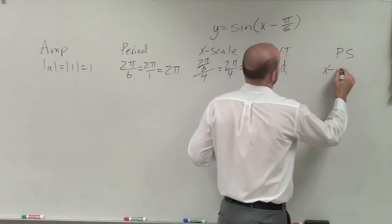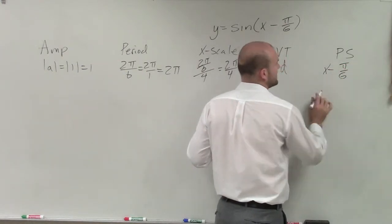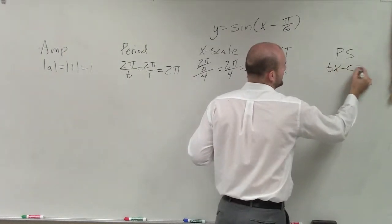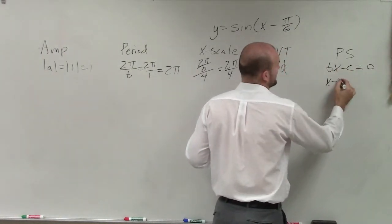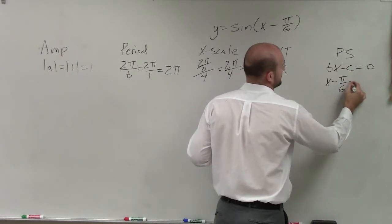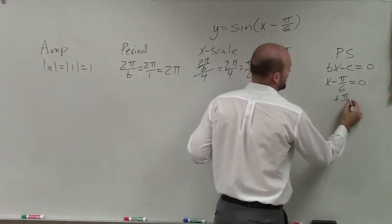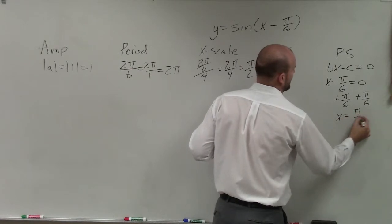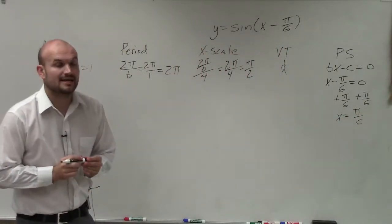And the last one, we have x minus pi over 6. Phase shift, I'm sorry, let's write the general form first. Phase shift is taking our bx minus c equal to 0. So in this case, I have x minus pi over 6 equals 0. Add pi over 6. Add pi over 6. x equals pi over 6.